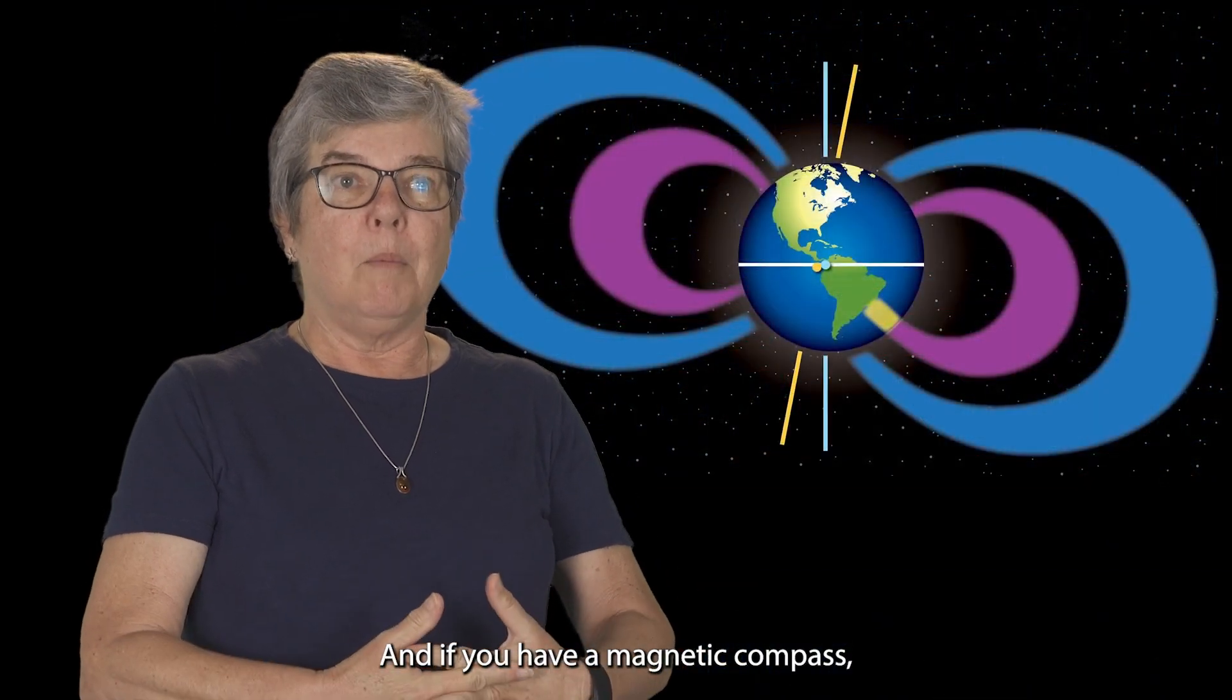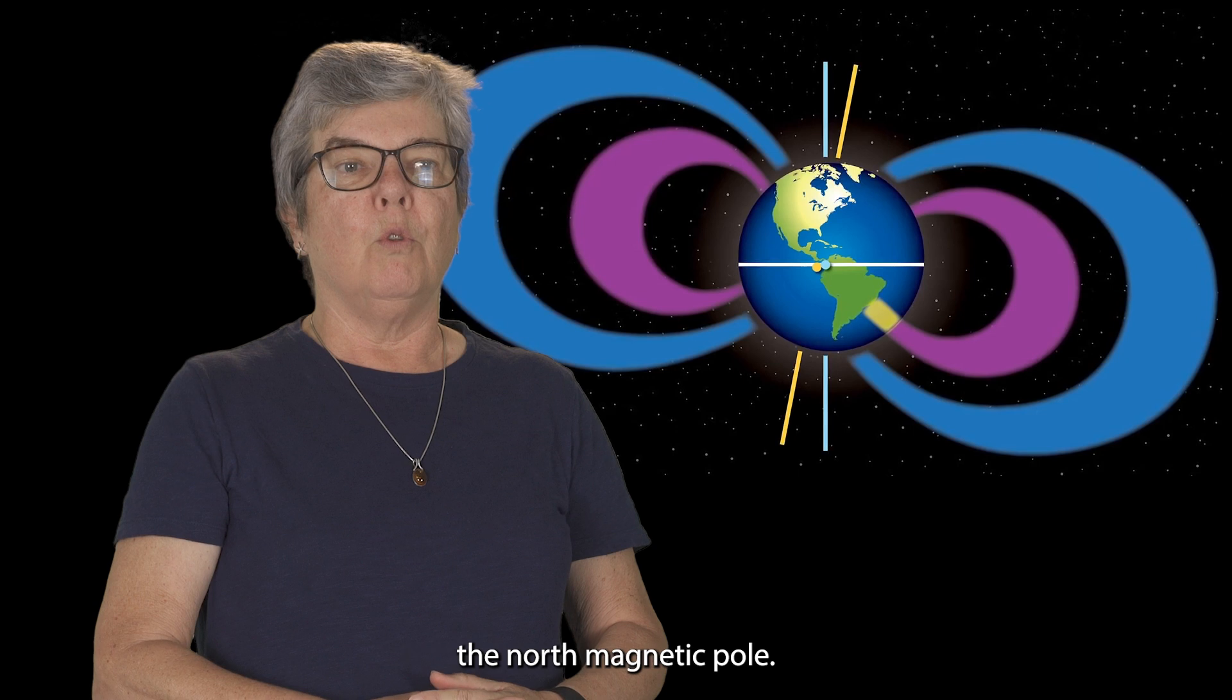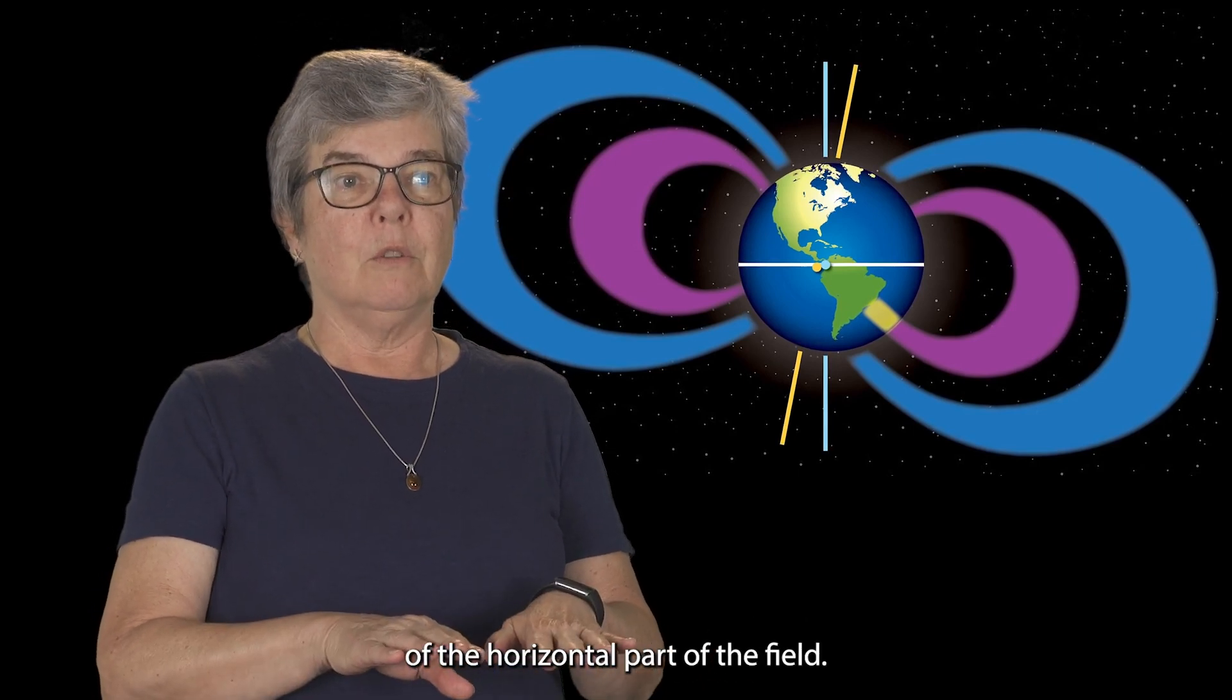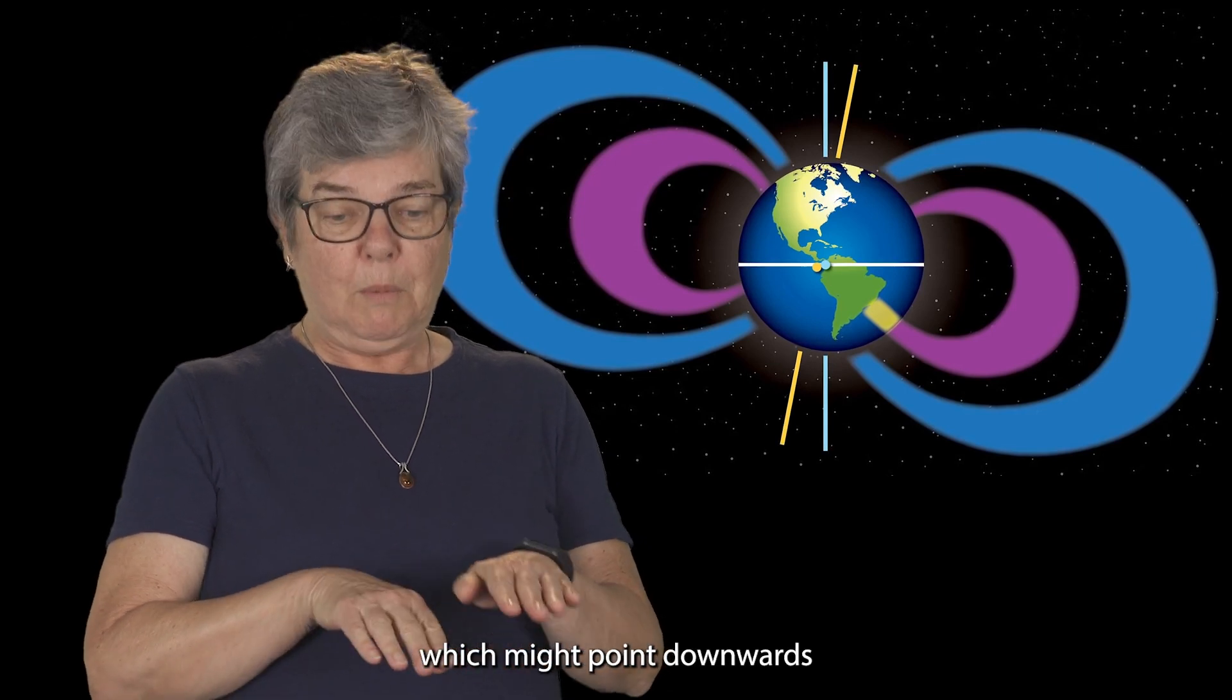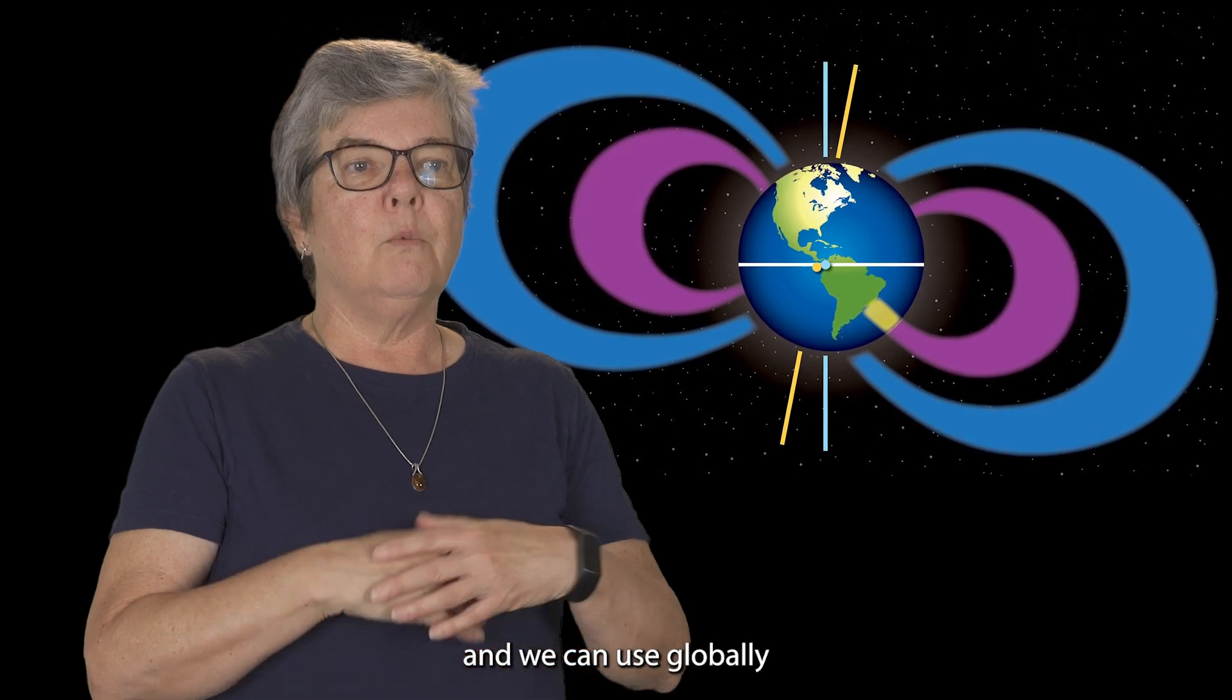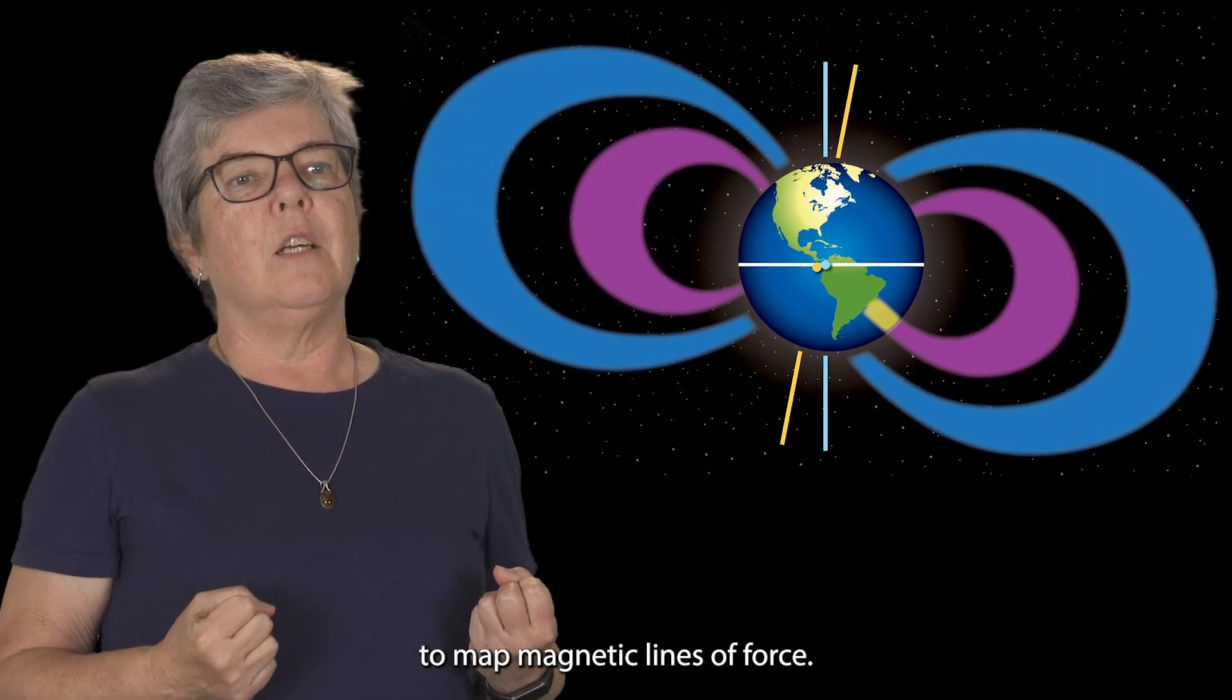And if you have a magnetic compass, then it will point towards the north magnetic pole. But that detects only the direction of the horizontal part of the field. In our three-dimensional world, we need to measure the complete magnetic vector, which might point downwards, mostly in the northern hemisphere. And we can use globally distributed measurements to map magnetic lines of force.